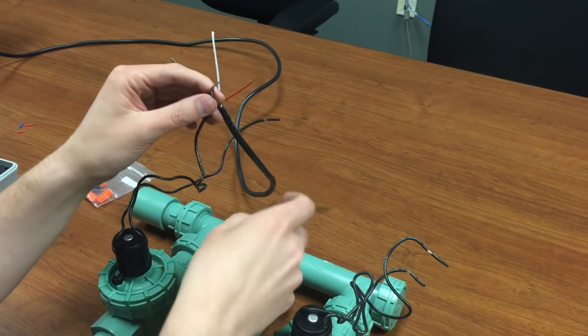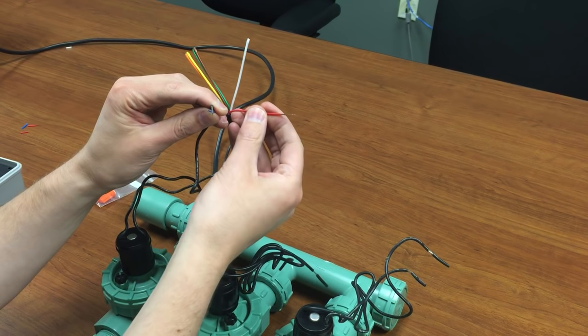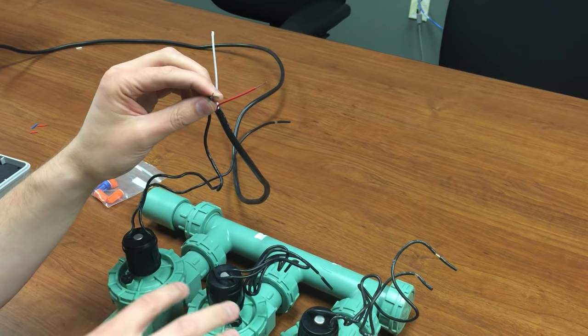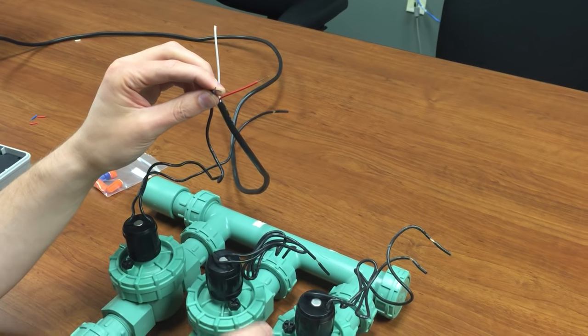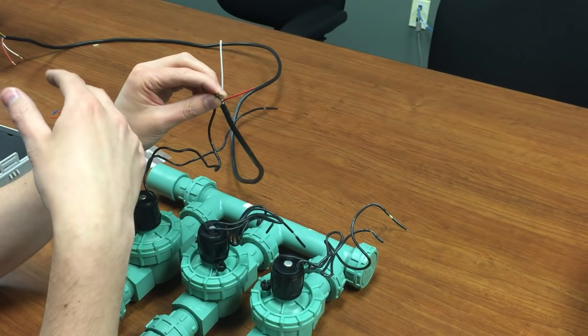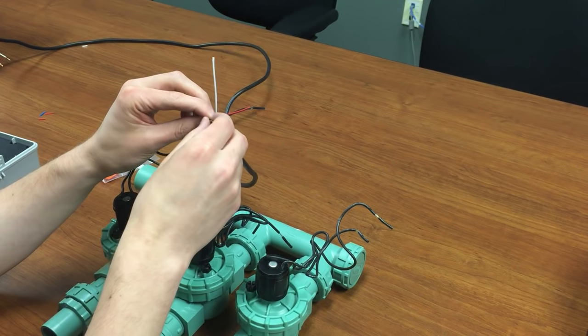You would wire each one of these solenoids to a different colored wire, keeping track of which solenoid is which color so that when you wire them to the timer, you can wire the appropriate color to the right station and get them to run exactly how you want to.